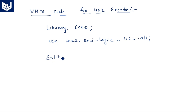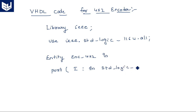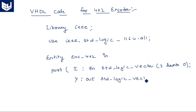Now, entity is the place where we declare the inputs and outputs. Entity encoder_4by2 is — there are 4 inputs: I, which is of input mode STD_logic_vector of size 4 bits, so 3 downto 0. And output: two outputs, Y_out, STD_logic_vector of size 2 bits, so 1 downto 0.